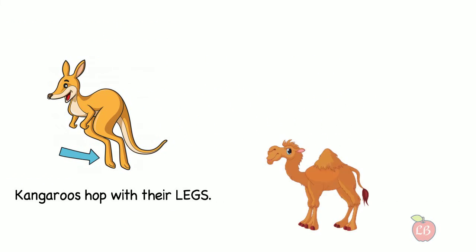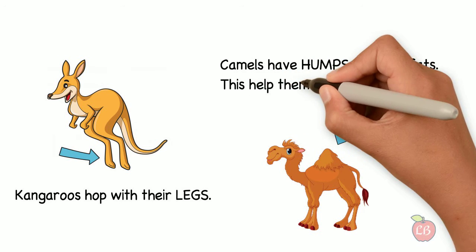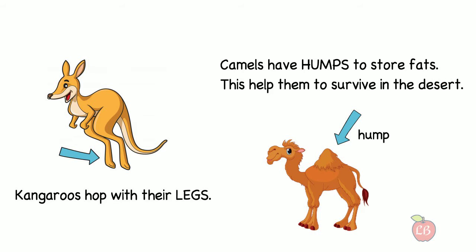Now the camel, do you know what is special about them? How do you call what they have in their back? Okay, that's a hump. Because camels have humps to store fats, and this helps them to survive in the desert.